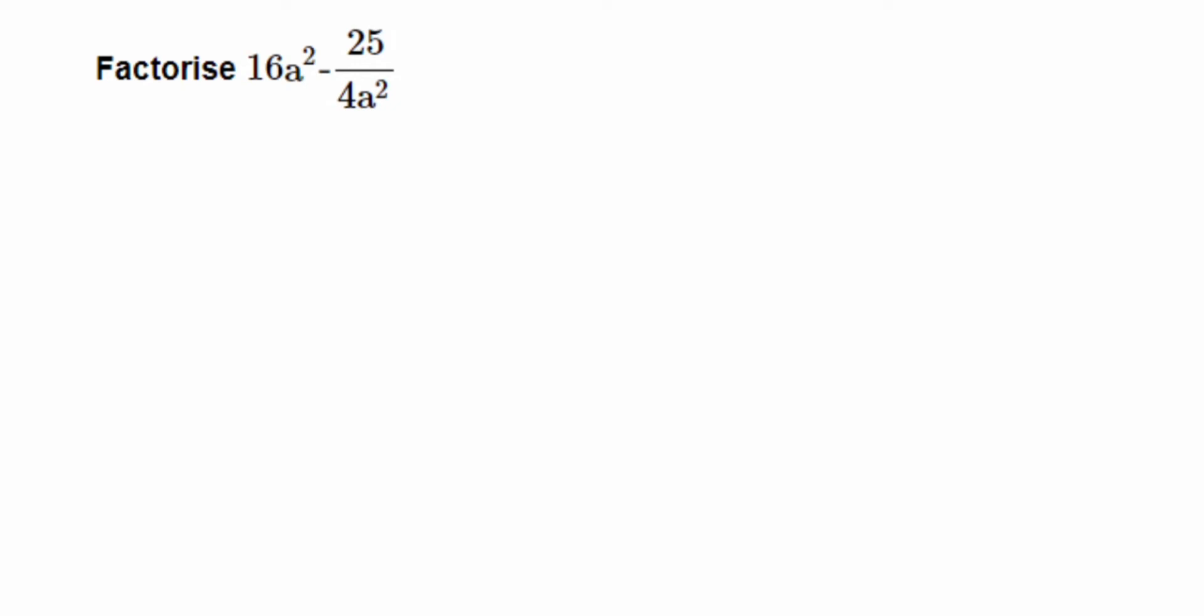Hey everyone, here's a question on factorization. The question is: factorize 16a² minus 25 upon 4a². We can solve this using an identity because there are only two terms.